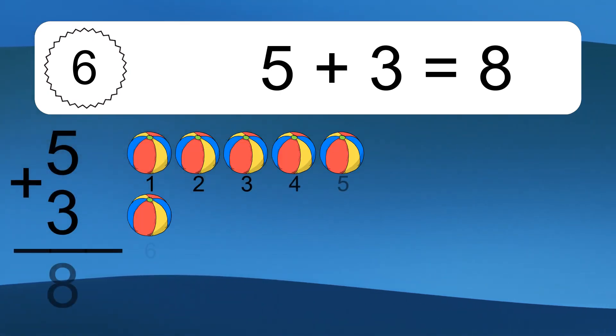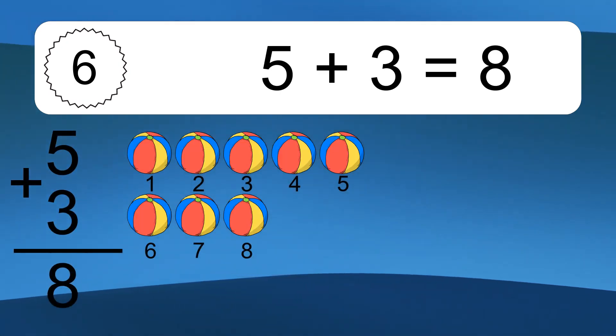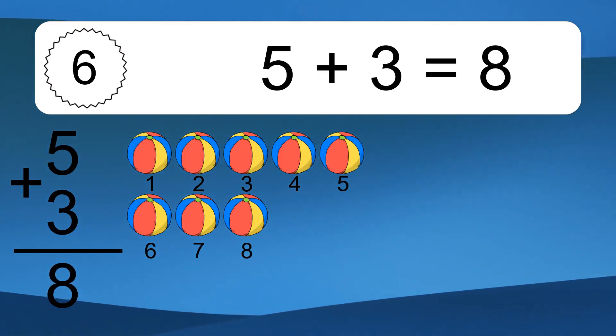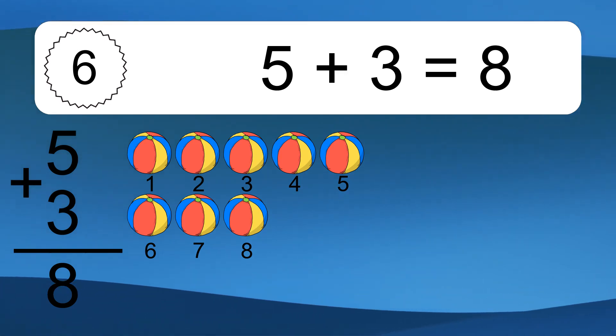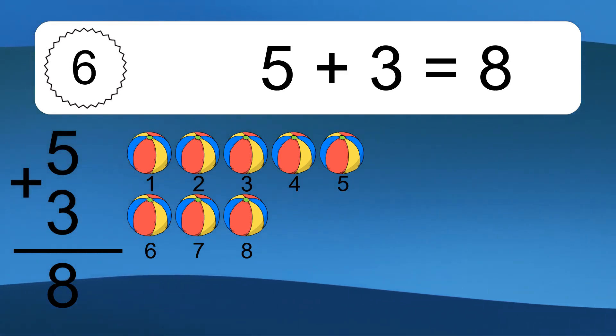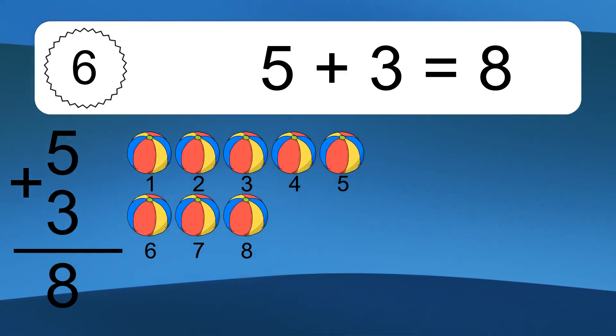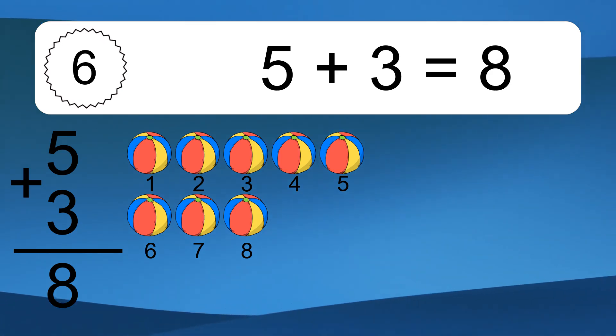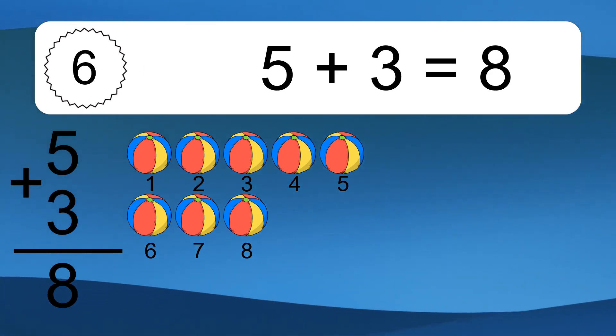5 plus 3 equals what? 5 plus 3 equals 8. Let's count it. 1, 2, 3, 4, 5, 6, 7, 8.